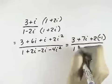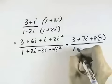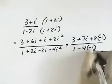And then 1, the 2i and the negative 2i cancel, so we have minus 4 times i squared, which is negative 1.